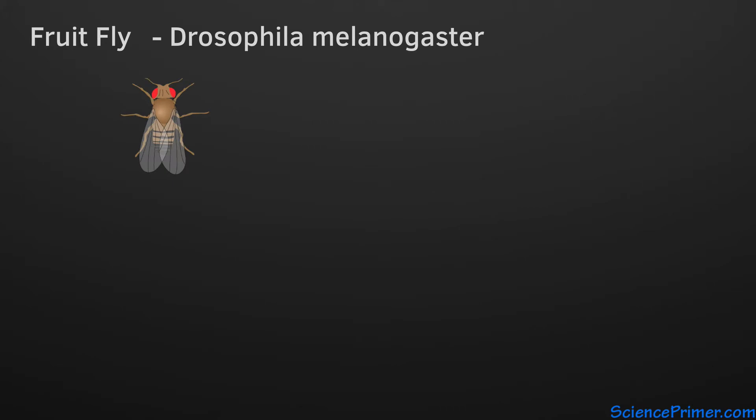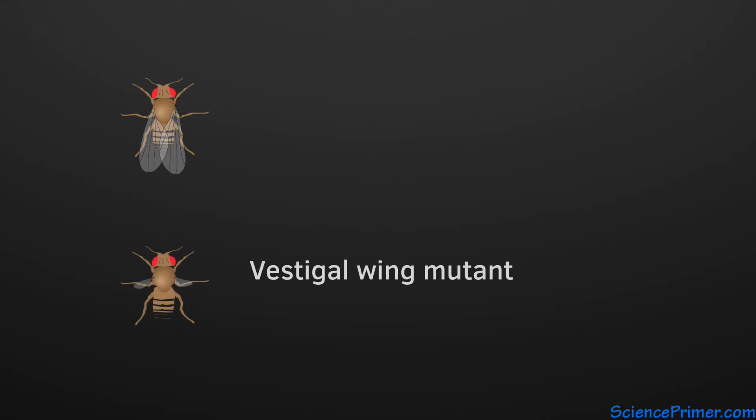Like the peas Mendel studied, a number of genetic mutations have been identified that affect visible phenotypes. One of these, called vestigial wing, causes individuals to grow very small, poorly formed wings.